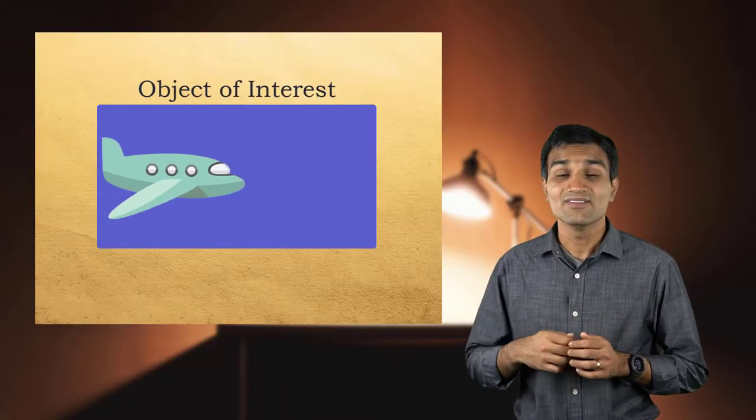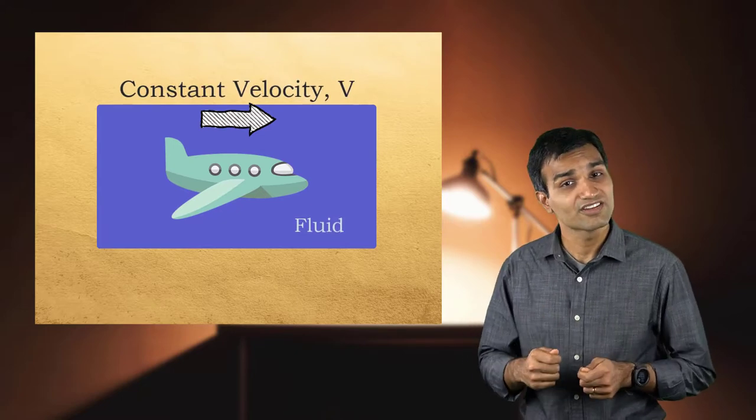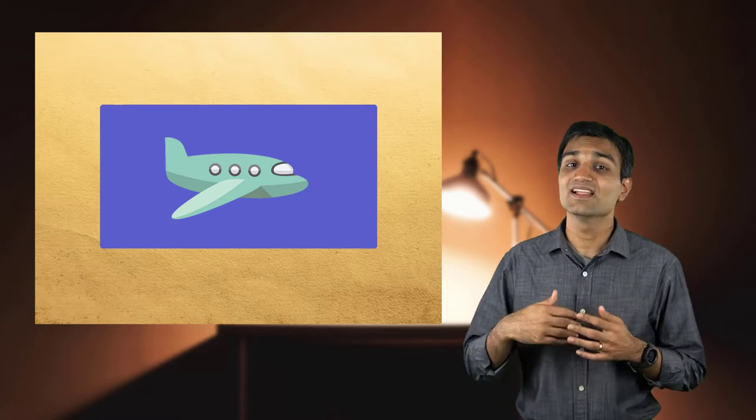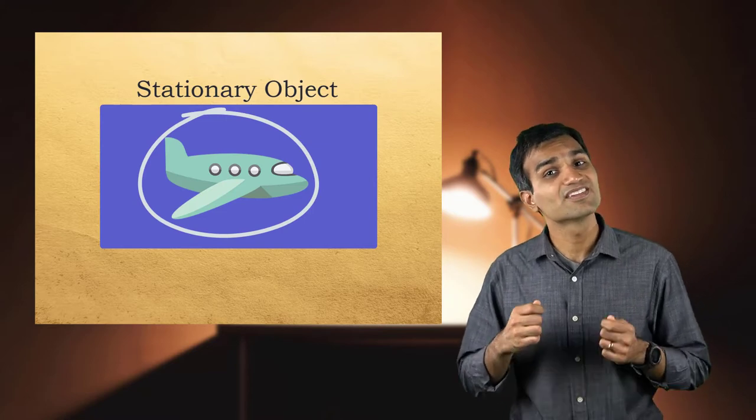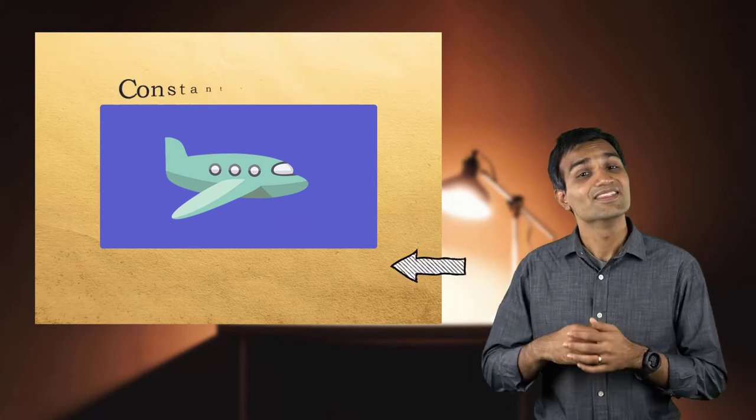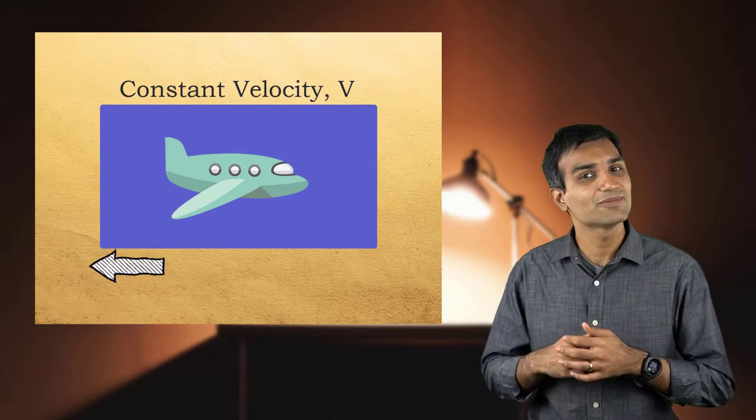In fluid dynamics, we encounter engineering applications where the object of interest is translating through the fluid at a constant velocity. To resolve the flow physics, we solve the flow field by changing the frame of reference from the fluid to the moving object. In other words, we invert the problem and the object of interest becomes stationary. The fluid is now moving over the stationary object at a constant freestream velocity.